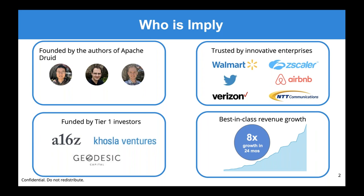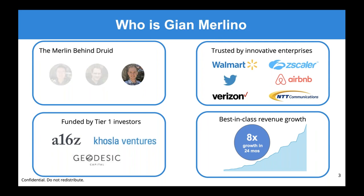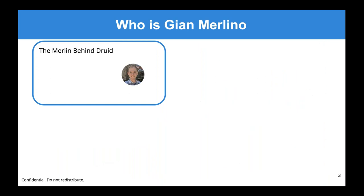Imply continues to invest heavily into Druid, and that's really what we're going to talk about today. Today's speaker is informally known as the Merlin behind Druid. Gian Merlino is the PMC chair and one of the key committers to Apache Druid. He frequently speaks on various topics around Druid, especially as newer features come out.